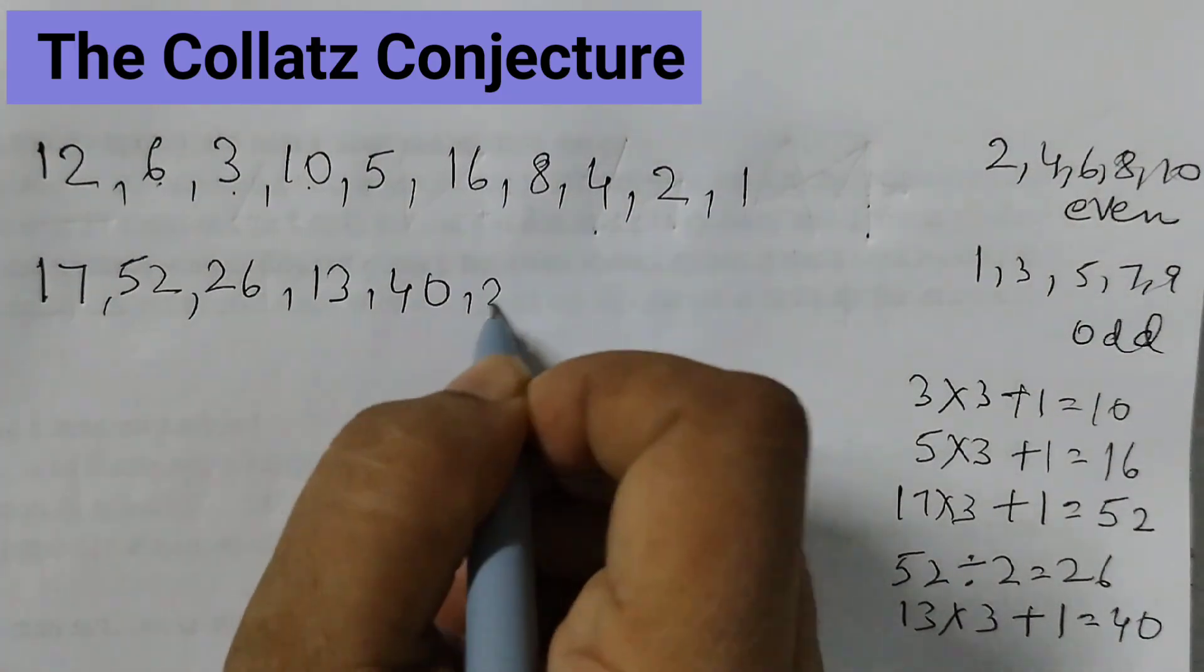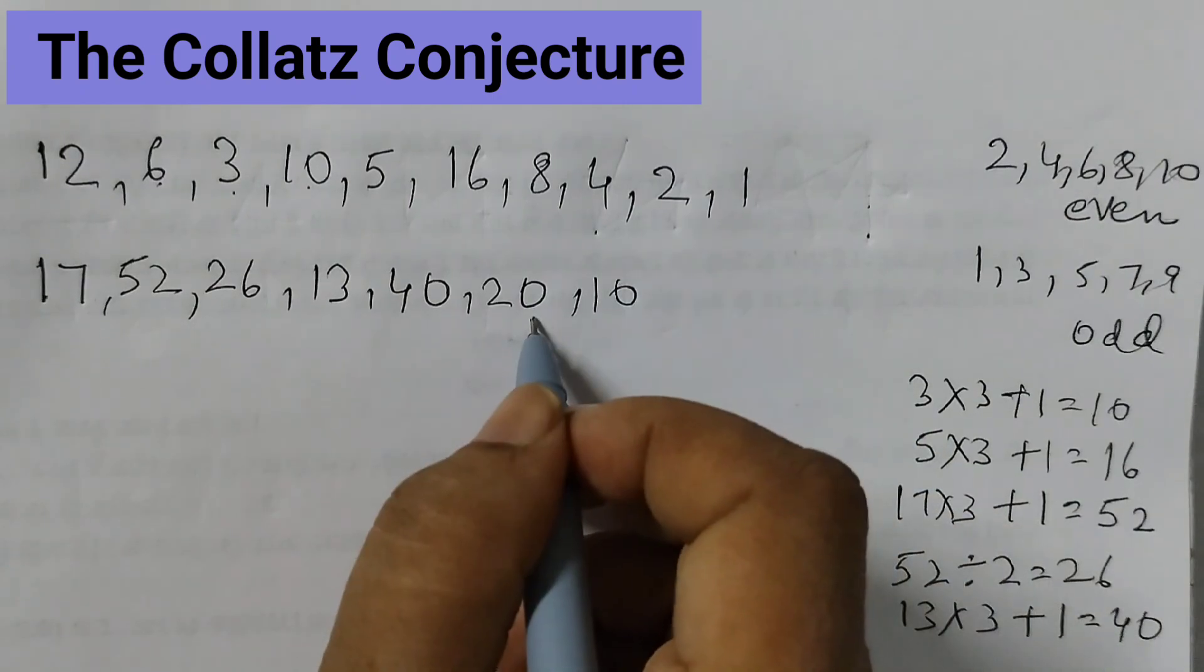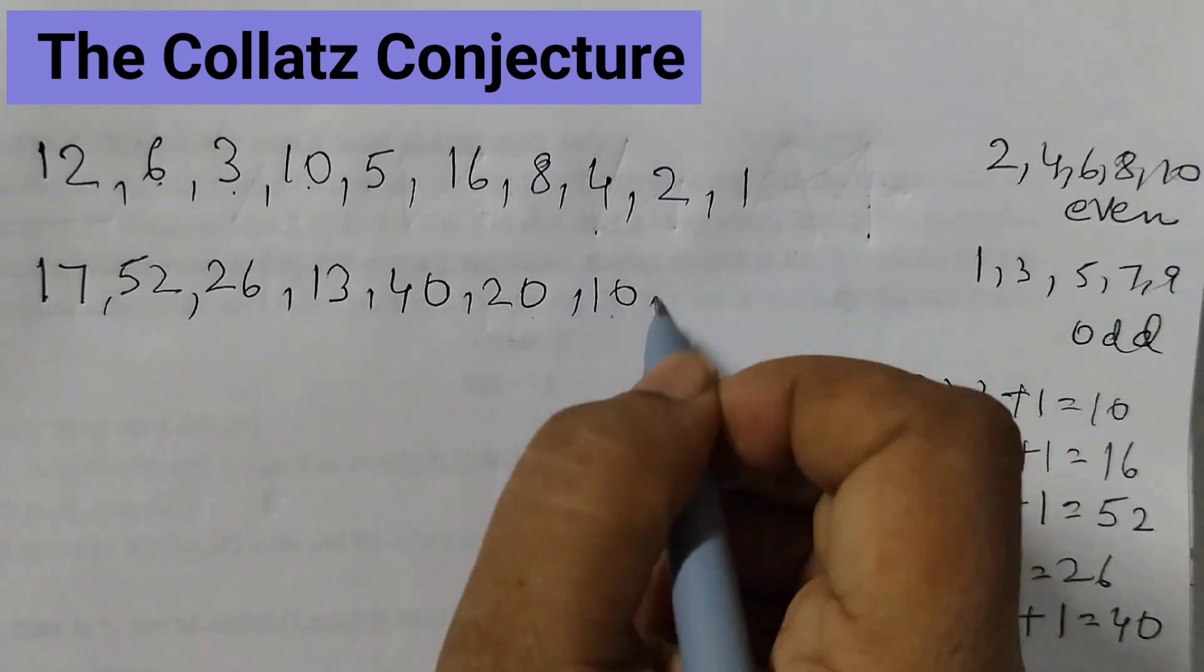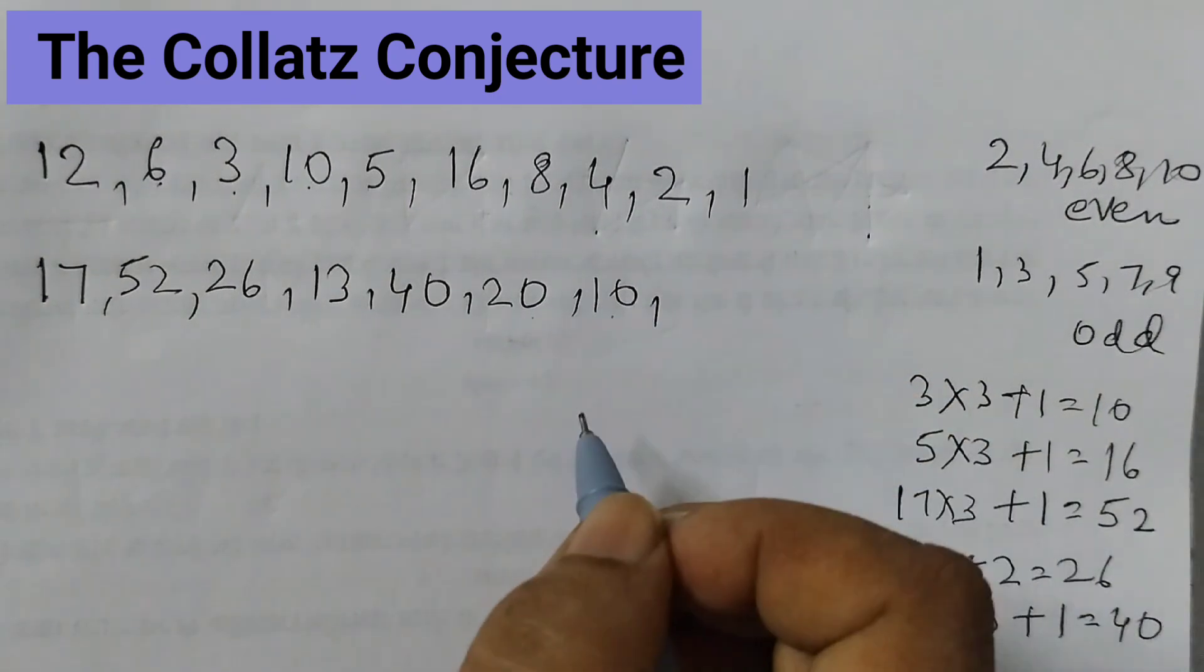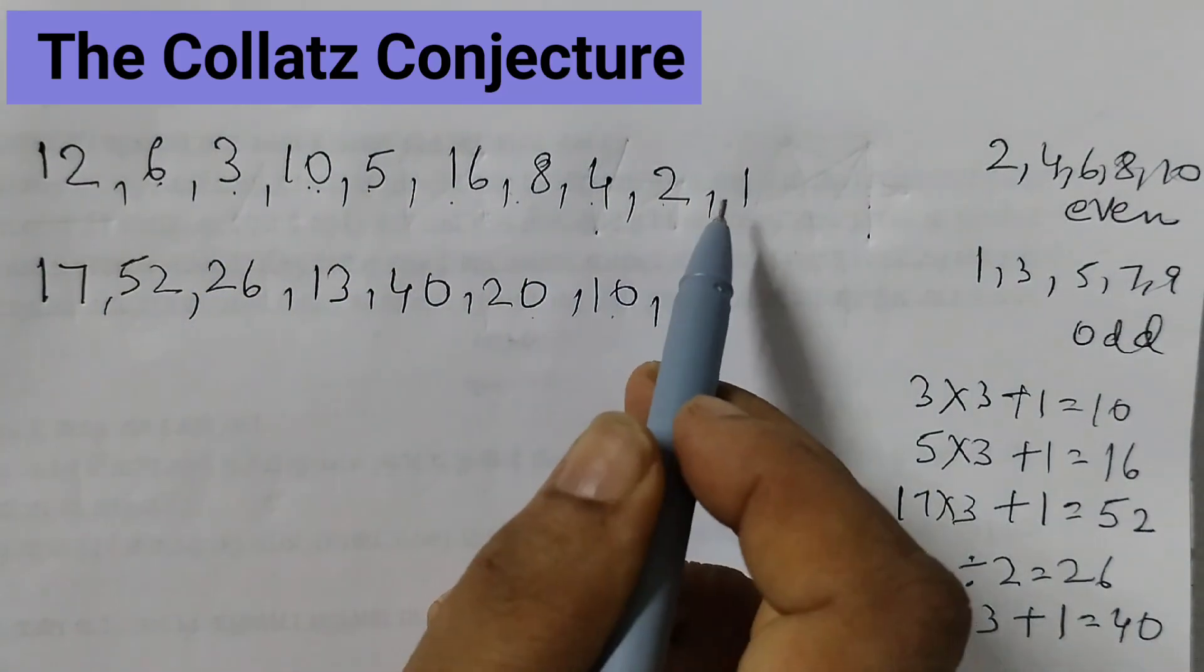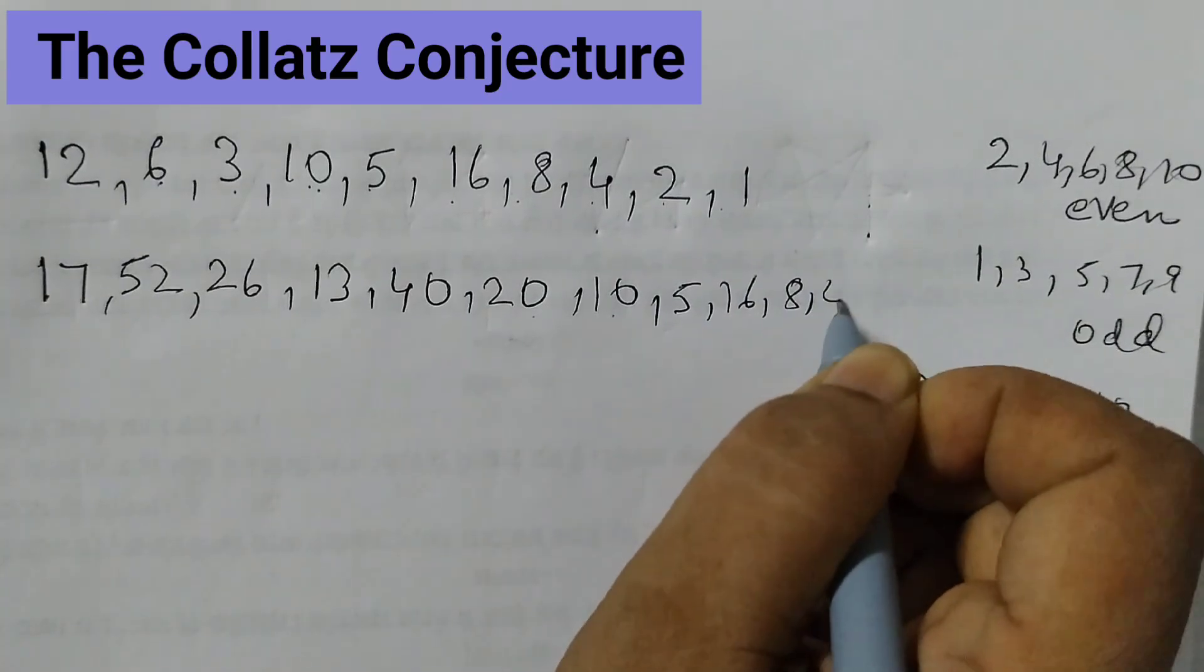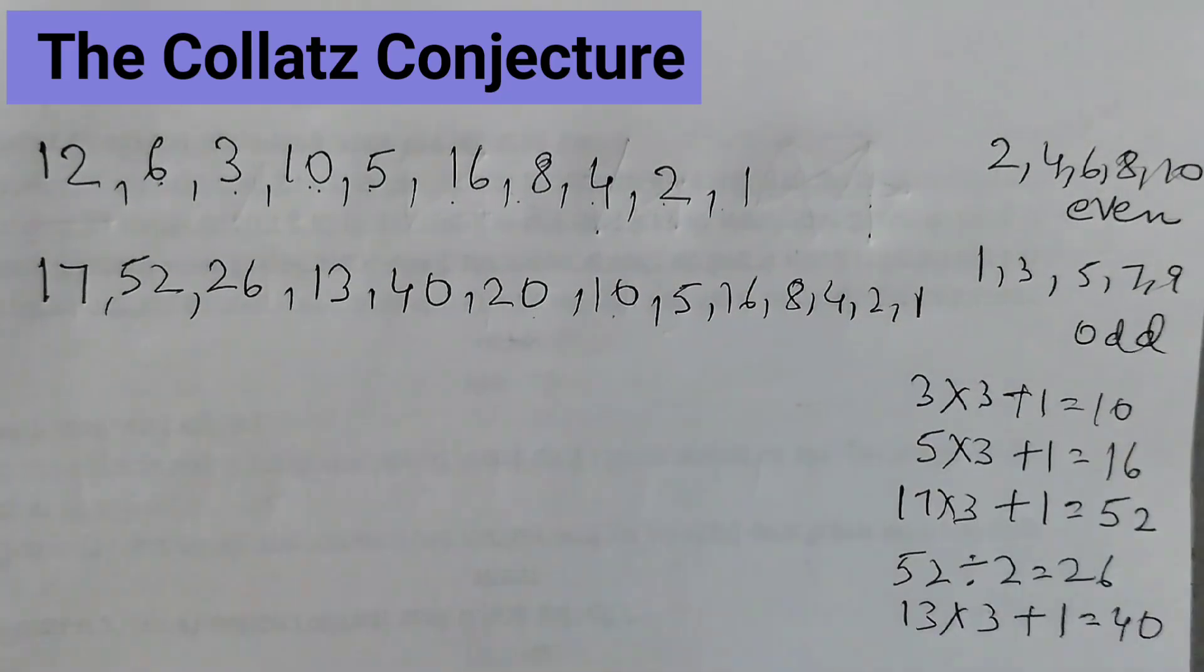So we get 40. 40 is an even number, so that will be 20. 20 even number, divide by 2, we get 10. 10 is an even number. And now see it will follow this pattern. 10, 5, 16, 8, 4, 2, 1. So 10, 5, 16, 8, 4, 2, 1.